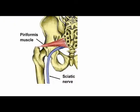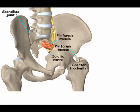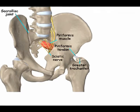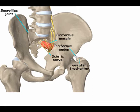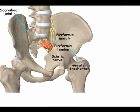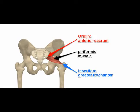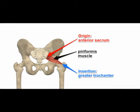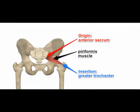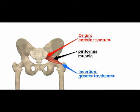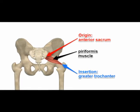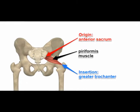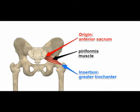The piriformis muscle is flat and pyramid-shaped. It originates on the anterior part of the sacrum between the first, second, third, and fourth anterior sacral foramen. It runs lateral and exits the pelvis through the greater sciatic foramen. Its tendon joins with the tendon of three other muscles and attaches to the upper border of the greater trochanter of the femur.